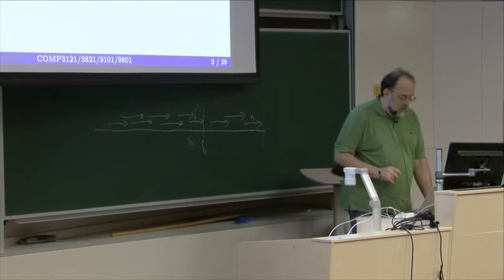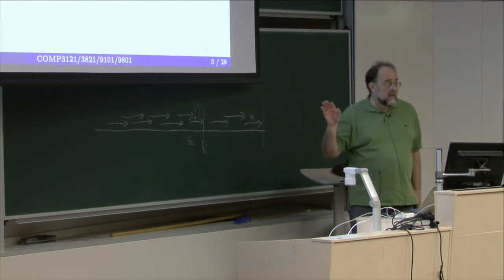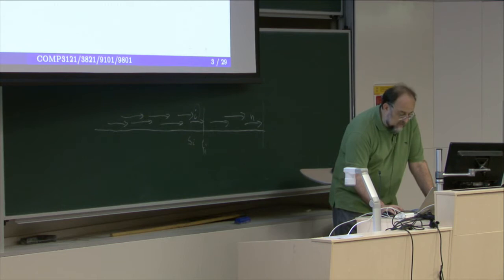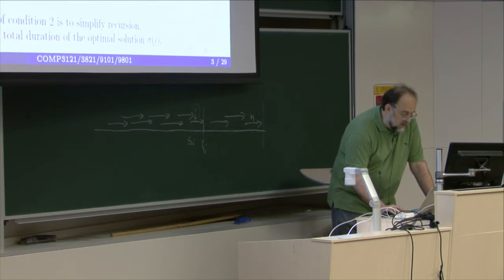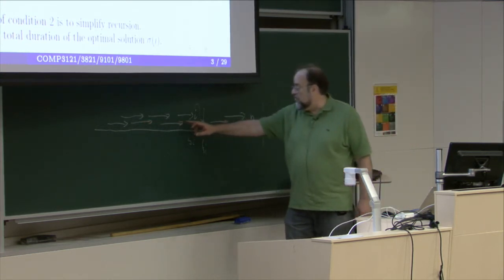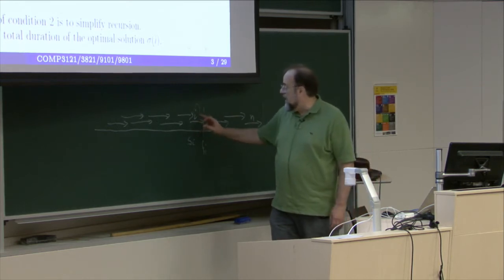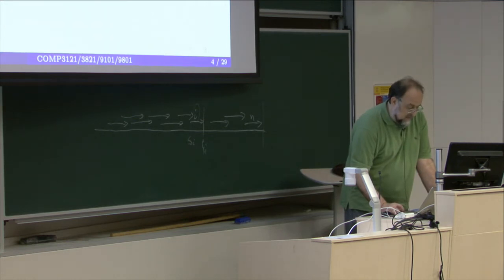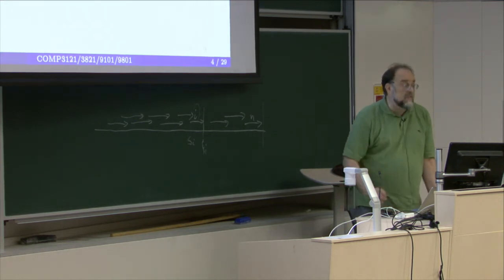Once we solve that problem, we put it in a table so that whenever we need it, we can just look it up. Let's denote by T(i) the total duration of the optimal solution sigma i — the total duration of the disjoint set of activities that end with i and is as long as possible. How do we start the recursion? The base case is activity 1: T(1) equals f1 minus s1, which is just the length of the first activity.